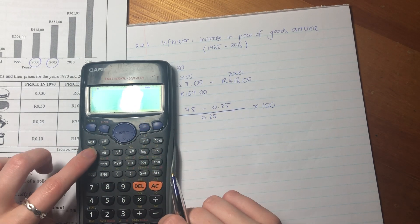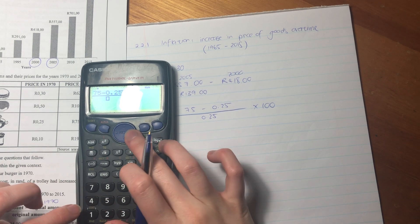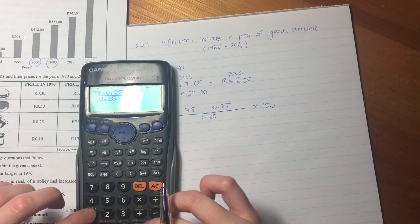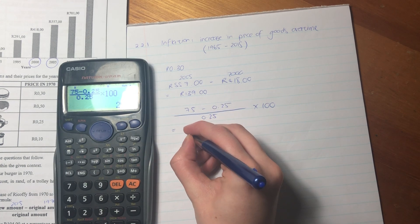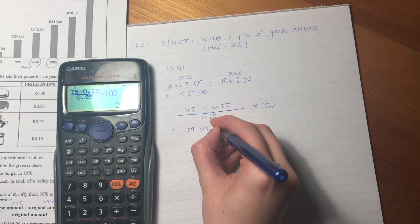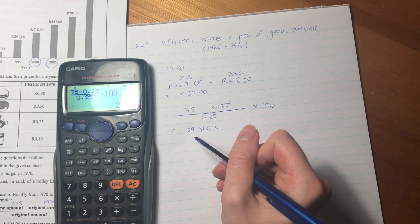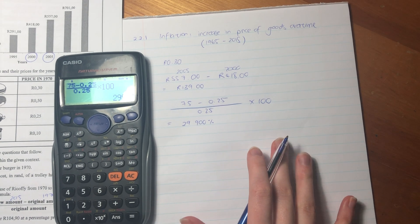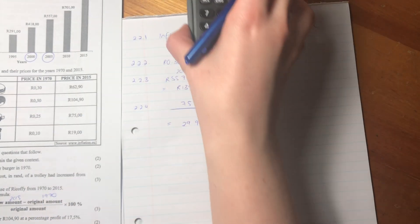So we go 75 minus 0.25, over 0.25 times by 100. And the answer is as a percentage. So the price of Ricoffy increased by 29,900% over these 45 years. Can you believe it? That's incredible.